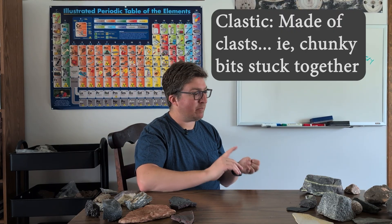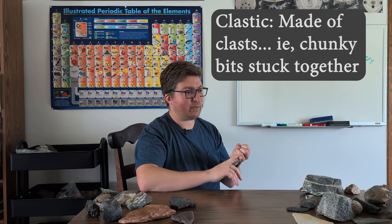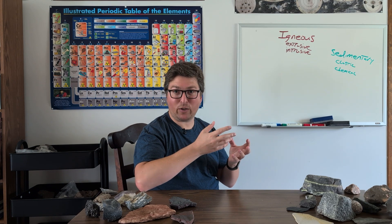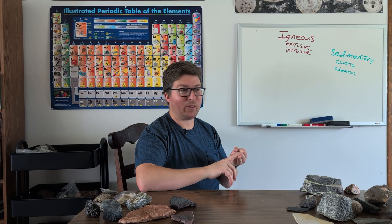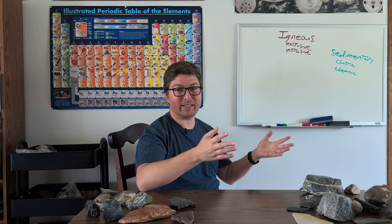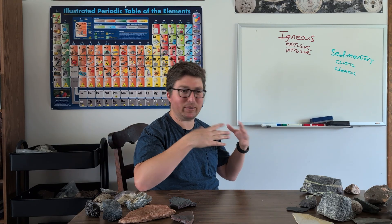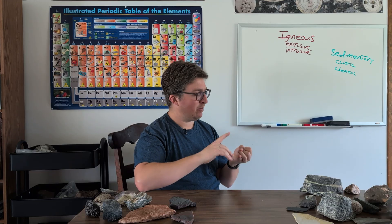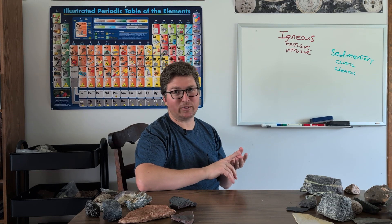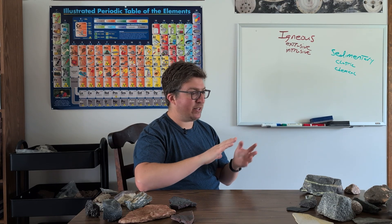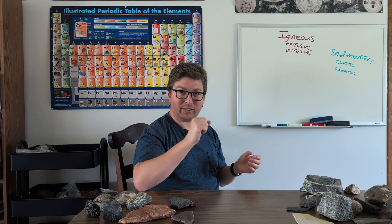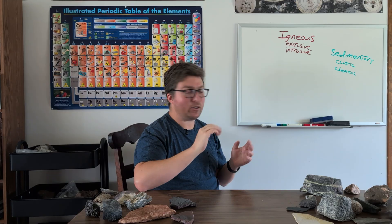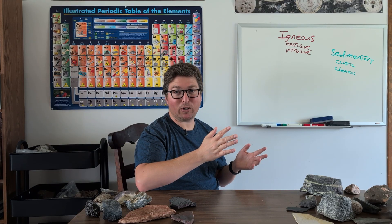Your classic clastic sedimentary rocks include conglomerates, where you have big cobbles that have rolled down from a mountainside through a stream valley; sandstones, where a river has deposited sand and the sand layers have built up and turned to rock over time; and mudstones, claystones, and shales. These are all based on the size of the clast, ranging from stuff the size of my fist down to microscopic size when you're talking about shales.